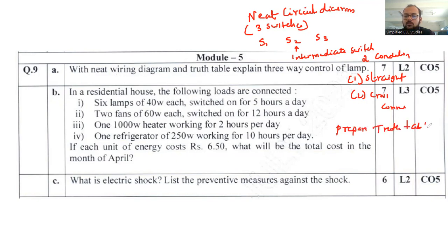Then you prepare a truth table. There will be a total of eight conditions. You have to list four conditions for cross connection and another four conditions for straight connections.